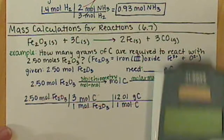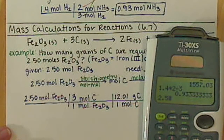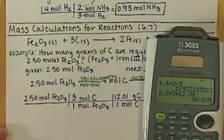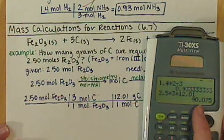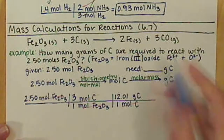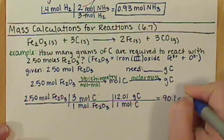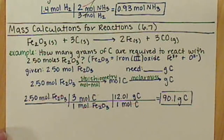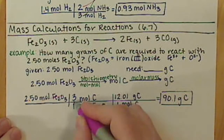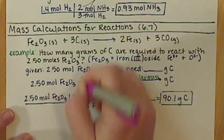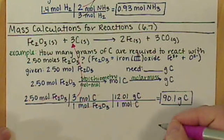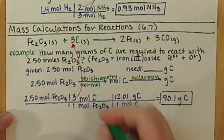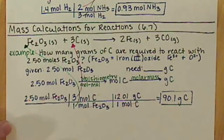We plug this into our calculator: 2.5 times 3 times 12.01. We get 90.075. Three sig figs from our starting number, so we have 90.1 grams of carbon. The 3 for the moles of carbon came from our coefficient in front of carbon, and the 1 for Fe2O3 came from the coefficient in front of Fe2O3.